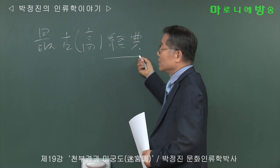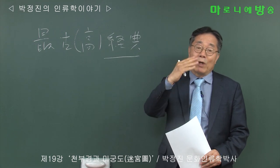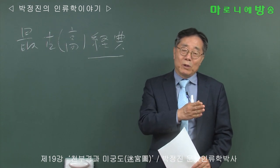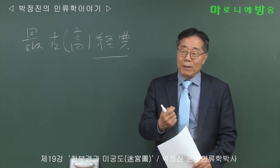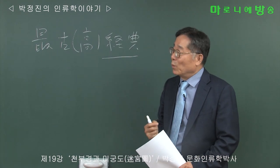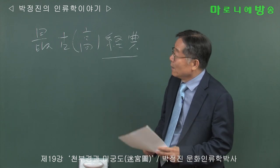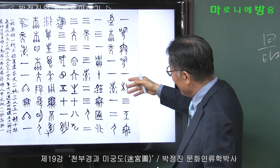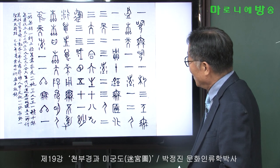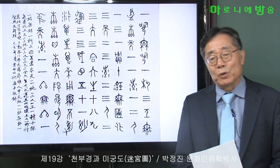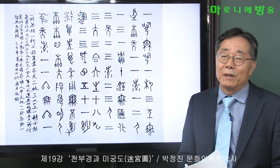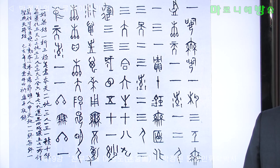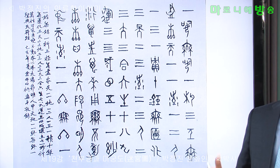이런 경전을 이해하려면 옛날과 지금이 완전 관통해서 알아야 합니다. 또 특히 동양문명과 서양문명에 대해서 확실히 관통해야 알게 됩니다. 다시 말하면 동서고금이 관통해야 이걸 제대로 되살려낼 수 있습니다. 최근에 중국에서도 이 경전에 대해서 관심이 많습니다.